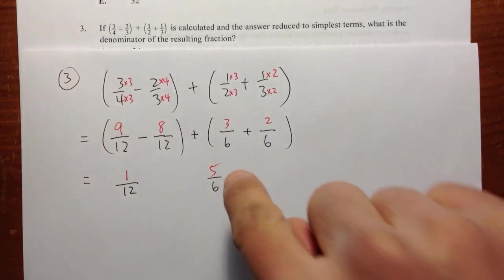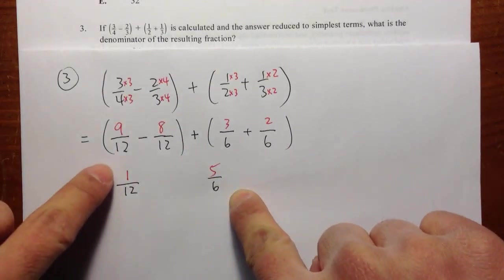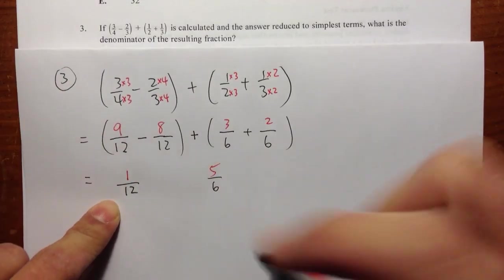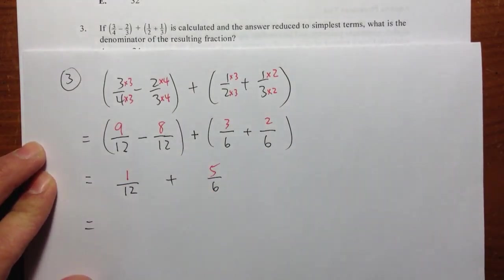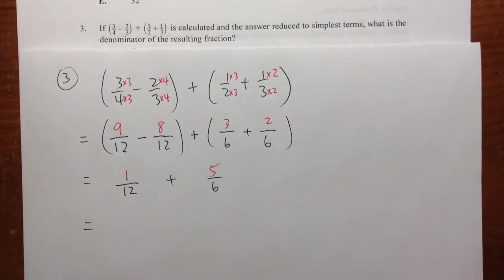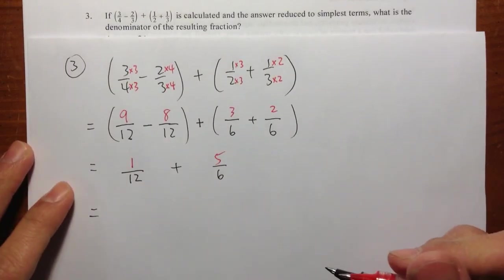And then I'm going to take 5 over 6 right here. And then earlier we got 1 over 12. We are going to add them up together. Again, we must have the same denominator.